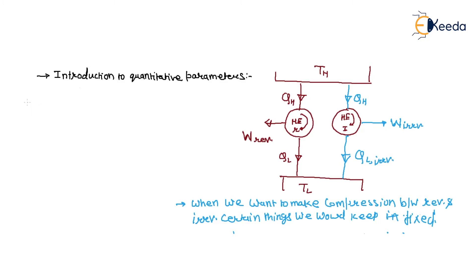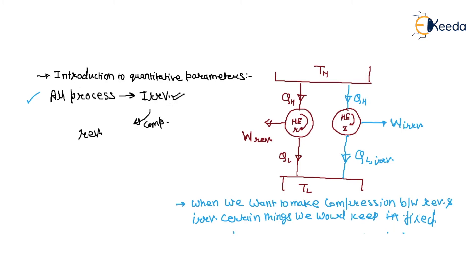We know that all processes which happen in nature are irreversible. If we want to compare irreversible processes with respect to reversible processes, we want to know to what extent they deviate from the reversible process.